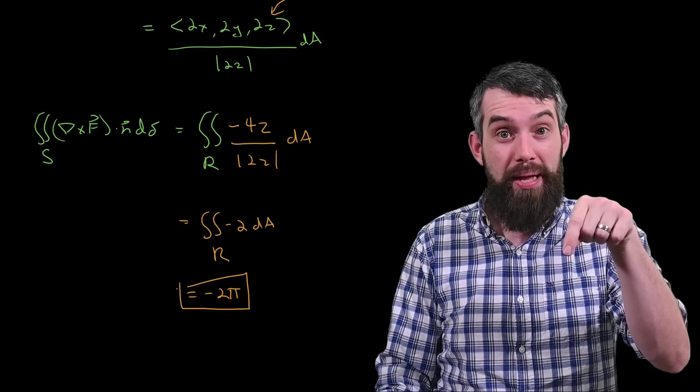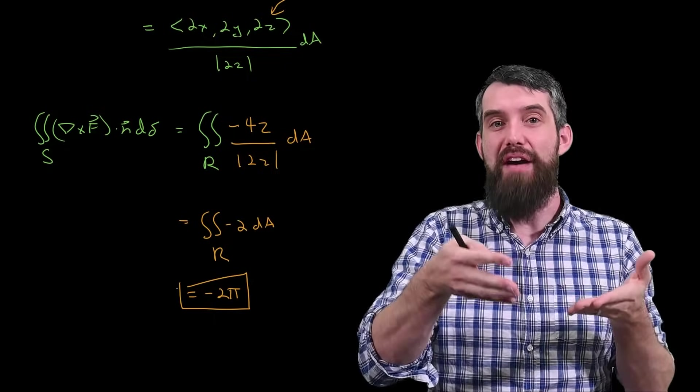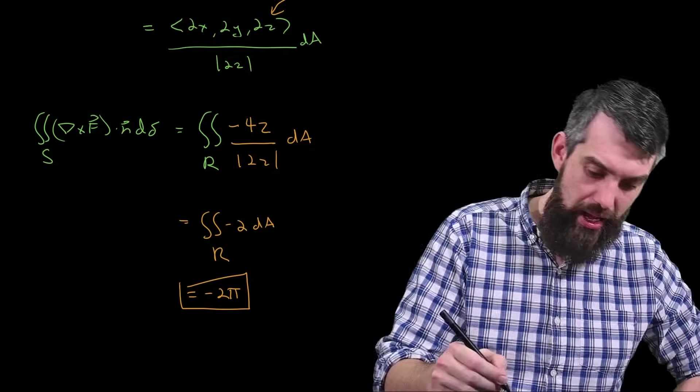One, computing the circulation directly. And secondly, doing a surface integral of the curl of f dotted with n.